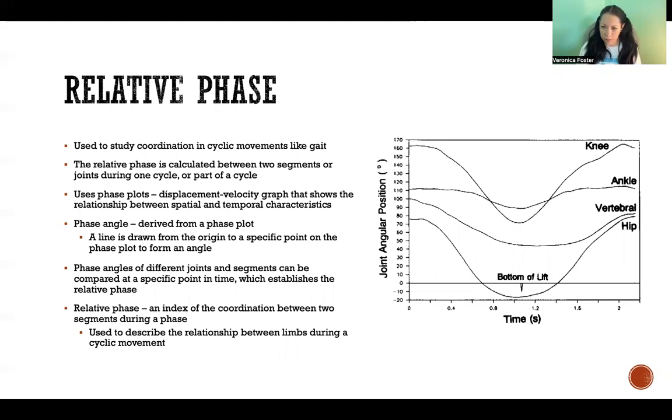It uses phase plots, like you see here on the right. We're looking at the displacement on one side and the time or the velocity on the bottom there. And it shows the relationship spatially and in temporal terms. So we're looking at the space and time differences or coordination patterns between the different joints that are plotted there.